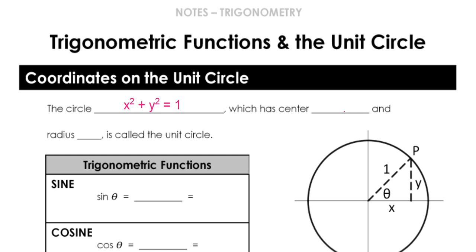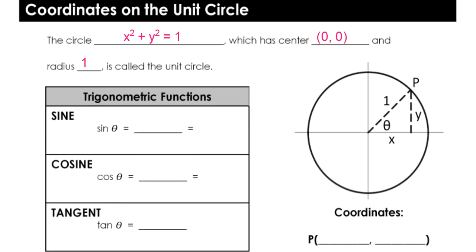If you remember from studying circles earlier, we know that means it is a circle with a radius of one and a center at zero, zero. So the unit circle is called the unit circle because its radius is one and it's centered at zero, zero. You can see a picture of what that circle looks like.